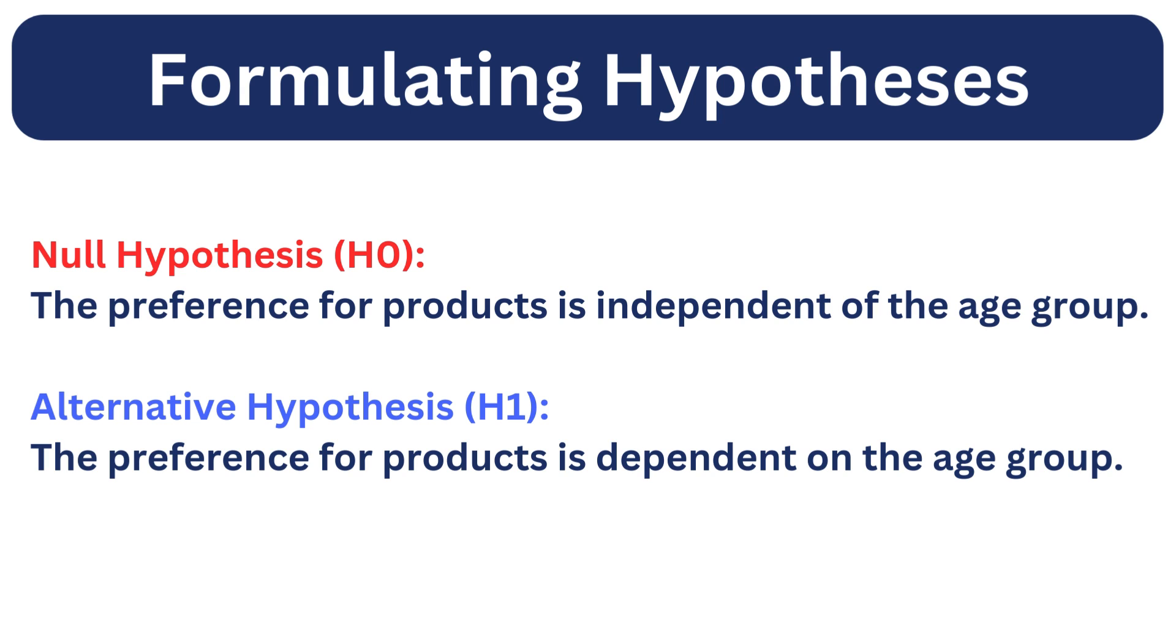To analyze this relationship, we will set up two hypotheses. The null hypothesis states the preference of product is independent of the age group. The alternate hypothesis states that the preference for product is dependent on the age group.